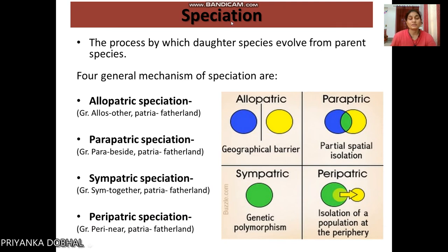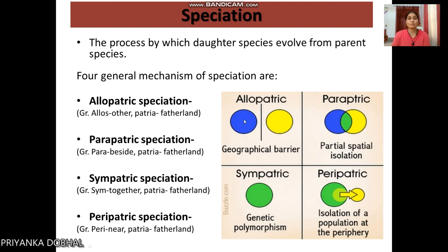To understand speciation, we talk about the process by which daughter species evolve from a parent species. There are four ways this can occur. The first is allopatric speciation, where there is a geographical barrier. Allopatric means 'other from the homeland' — when a barrier separates a main population, the separated groups become allopatric species.